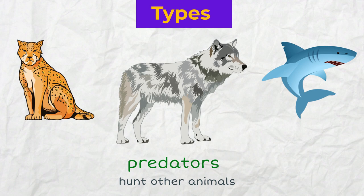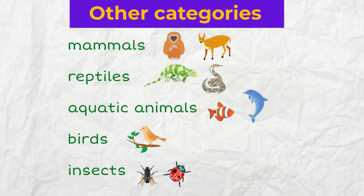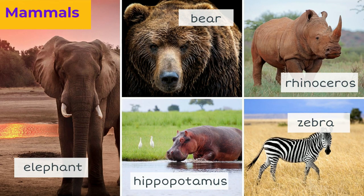Animals that hunt other animals are predators. However, there are more categories depending on a biological class inhabited, such as mammals, reptiles, aquatic animals, birds, and insects.